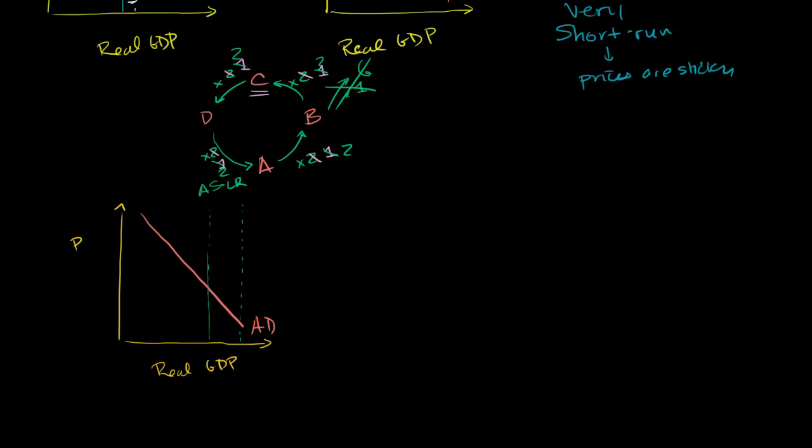The best model would be something that's in between. It might look something like this. So our aggregate supply curve might look something like, I want to do it in a different color. Let me do it in magenta. So it might look something like this. It might look something like this. So for whatever reason,